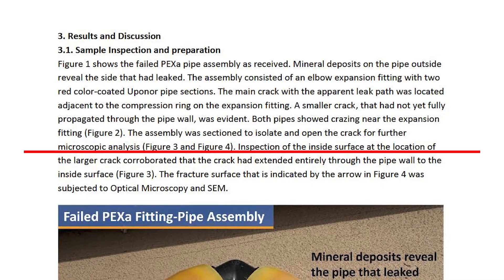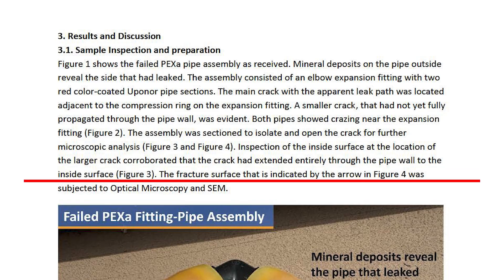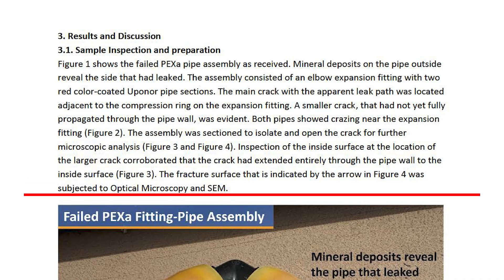The assembly was sectioned to isolate and open the crack for further microscopic analysis. Inspection of the inside surface at the location of the larger crack corroborated that the crack had extended entirely through the pipe wall to the inside surface. The fracture surface indicated by the arrow in figure four was subjected to optical microscopy and SEM.